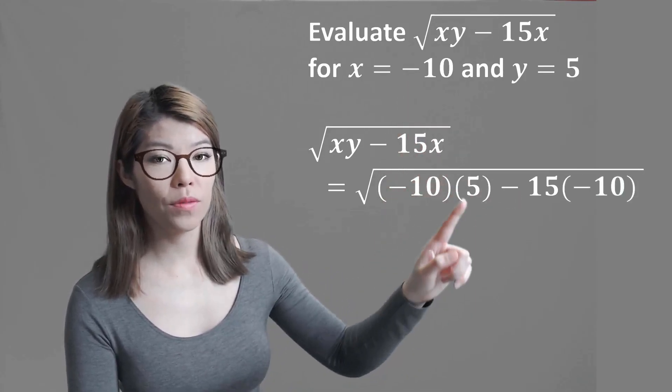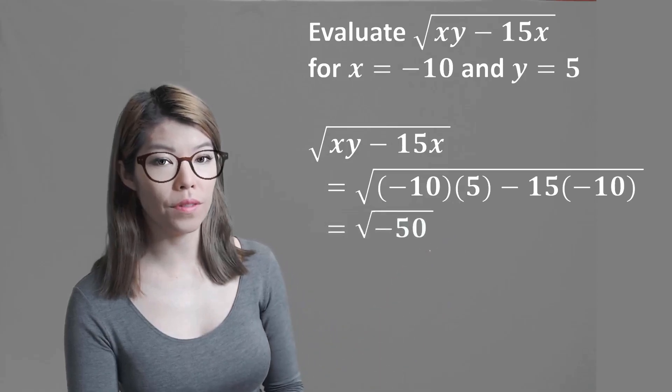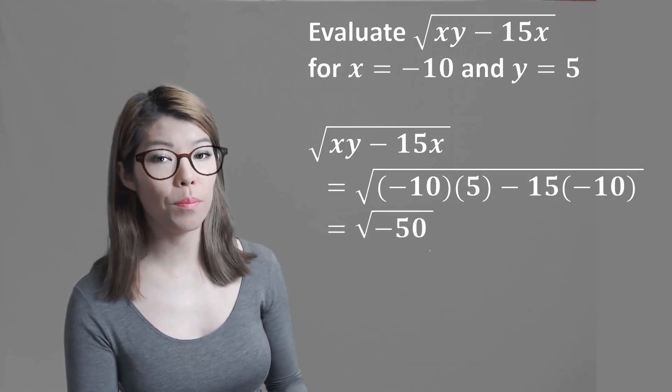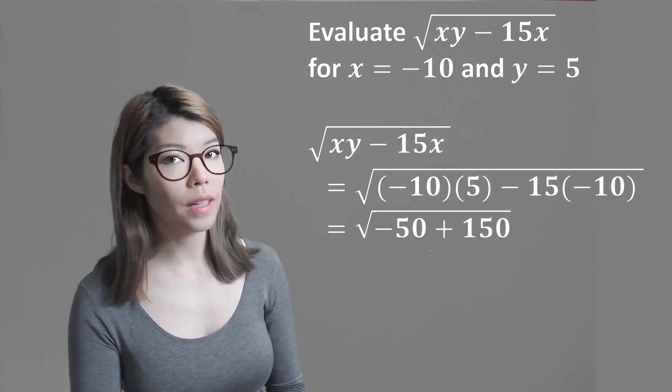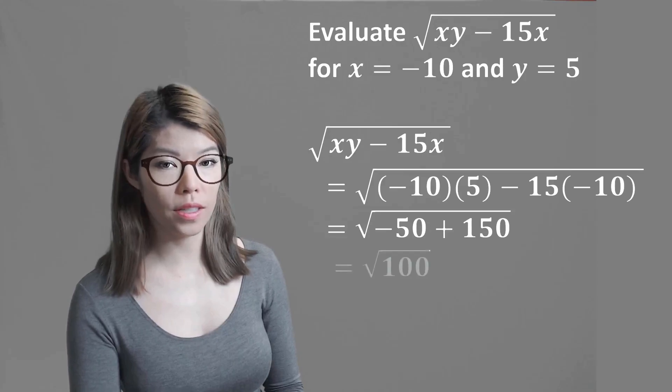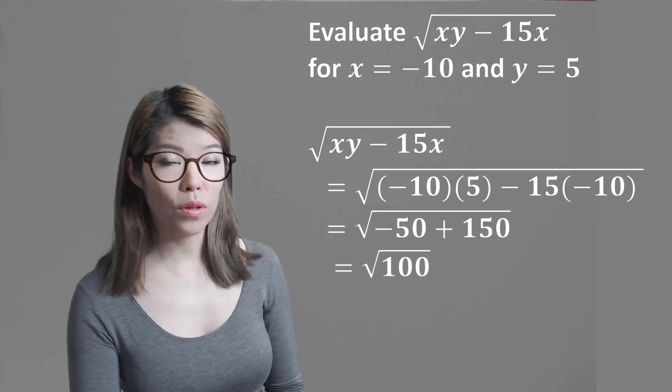Negative 10 times 5 is negative 50, and negative 15 times negative 10 is positive 150, and negative 50 plus 150 is positive 100, and square root of that is just 10.